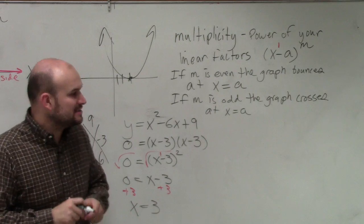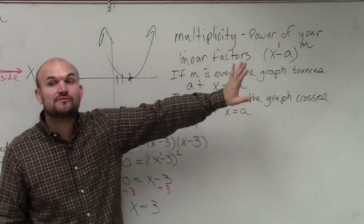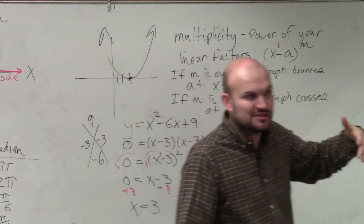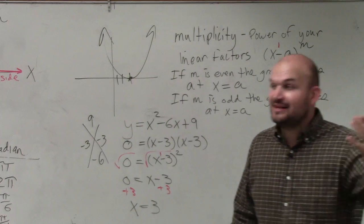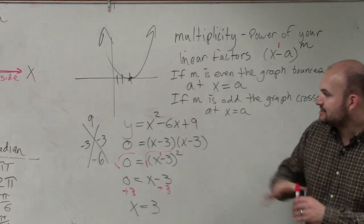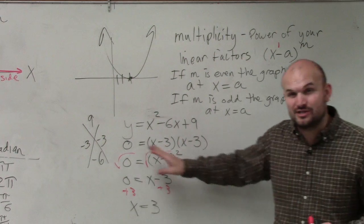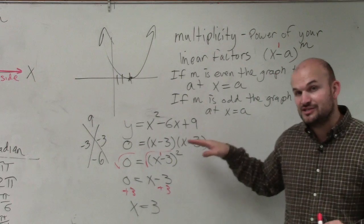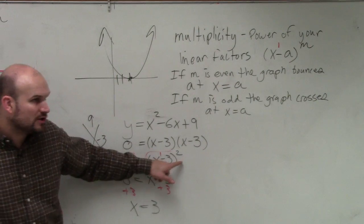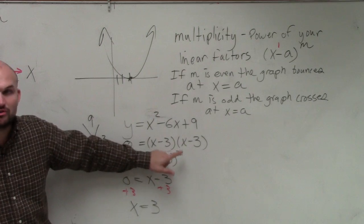So in reality, what multiplicity tells you is multiplicity tells us if the graph crosses or bounces at its x-intercepts. And all you need to do to find that is look at the factored form. When you have a product, or this is what we call the factorization. If you guys remember that test, they said something about factorization. This would be your factorization. When you factor polynomials out, the power of each and every factor is its multiplicity.